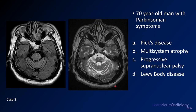Case three has the same history as the previous case — a 70-year-old man with Parkinsonian symptoms. Your choices are the same: Pick's disease, MSA, PSP, or Lewy body disease. For these images, you have an axial FLAIR and an axial T2.